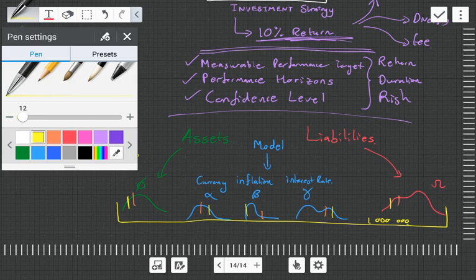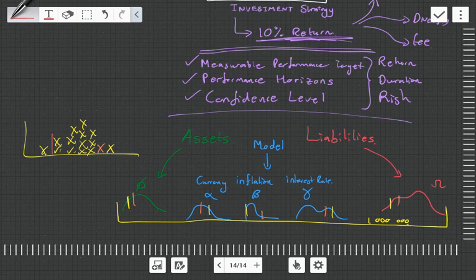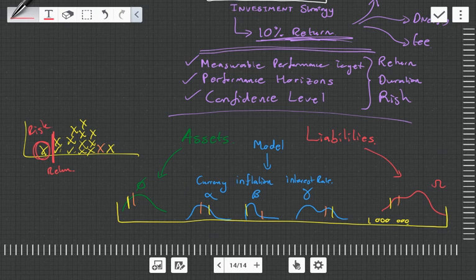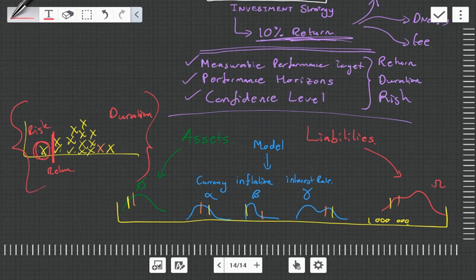Your input is distribution and your output is distribution. And let's say this is your target, to get a return above that amount. That will indicate your risk, and in the model you would have stated what your duration is.